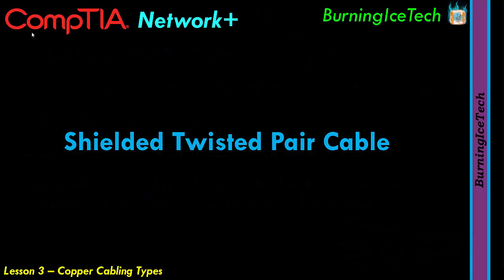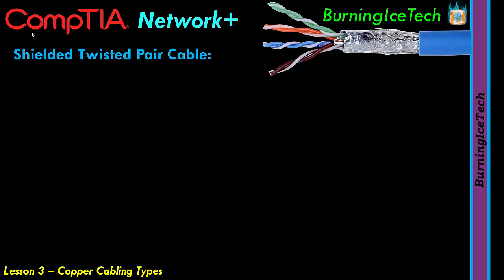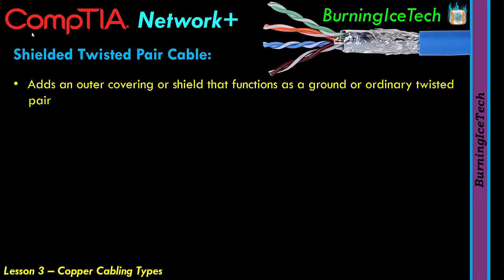Shielded twisted pair cable has a little outer covering or shield which functions as a ground. That shield needs to be grounded — the whole idea is to prevent interference from the outside or at least mitigate it as best as possible. If you don't ground that shield, it's not really going to serve its purpose. I know many technicians who know that STP is used to prevent interference, but they crimp an STP cable exactly like a UTP cable, not knowing they should ground the tinfoil for it to actually function properly and reap its benefits.